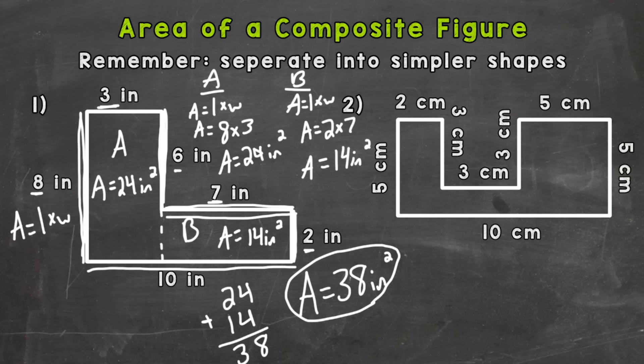For number one, we could have cut it the other way as well and made a top and a bottom rectangle, so usually there are multiple ways to separate a composite figure. It doesn't matter which way you separate it, but it does matter which numbers — which dimensions — you use for your length and width. So that's something you need to be careful of.